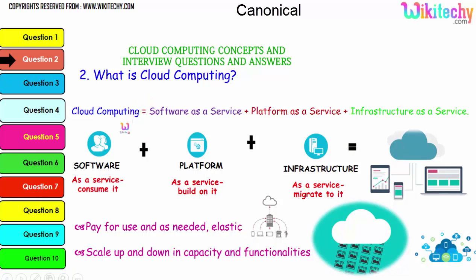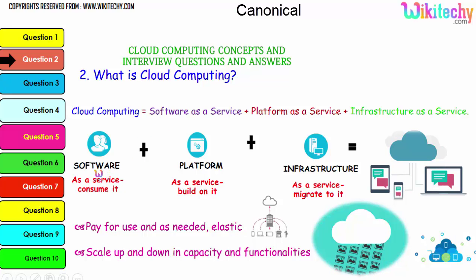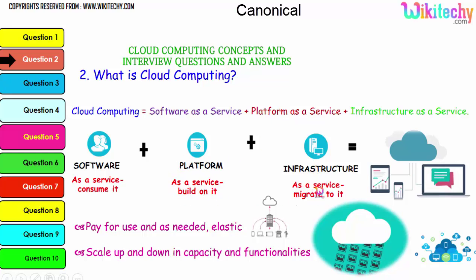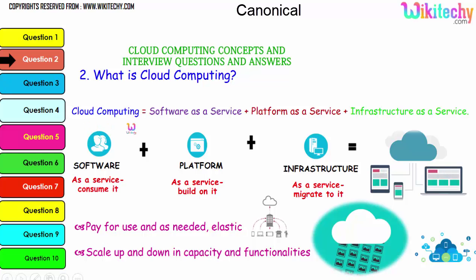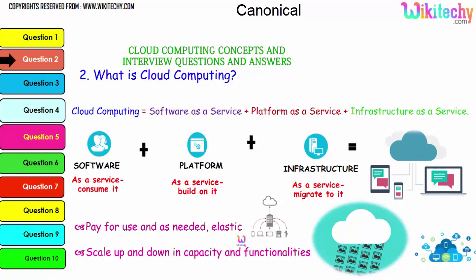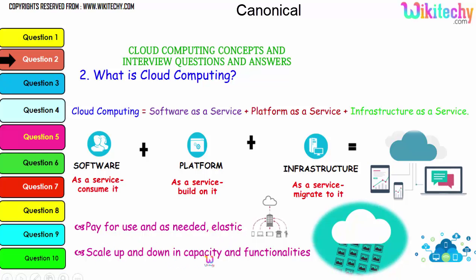Cloud computing is composed of Software as a Service, Platform as a Service, and Infrastructure as a Service. The collaboration of software, platform, and infrastructure is referred to as cloud computing. A major advantage is pay-for-use as needed, and it is elastic — if you need minimal storage, pay for that; if you need bigger storage, pay for that. You can scale up and down capacity and functionalities.